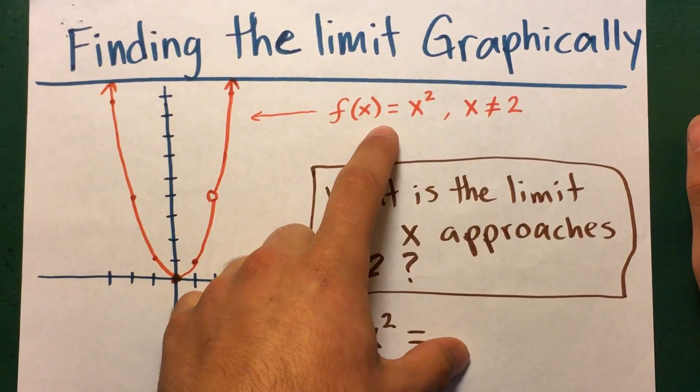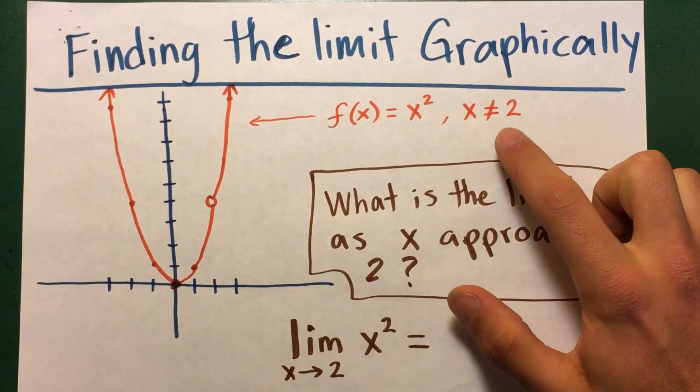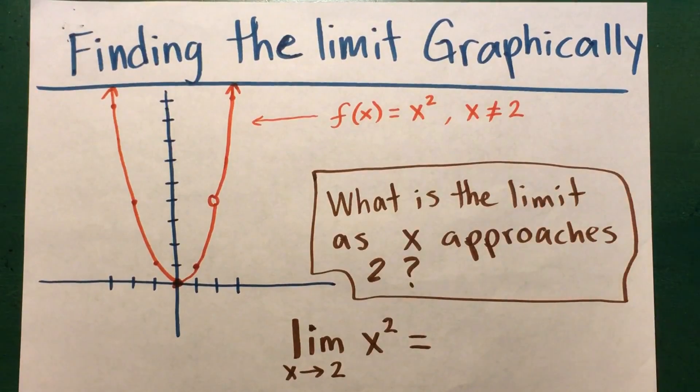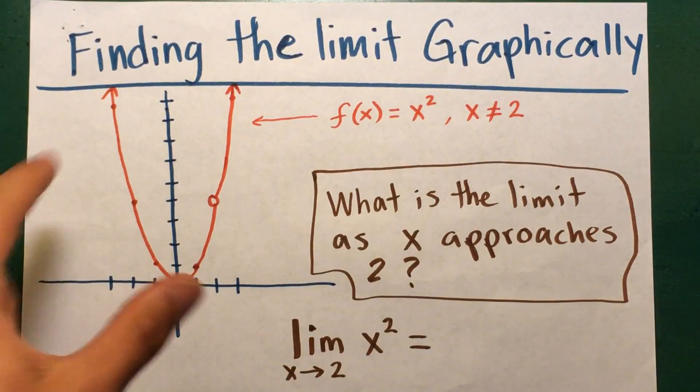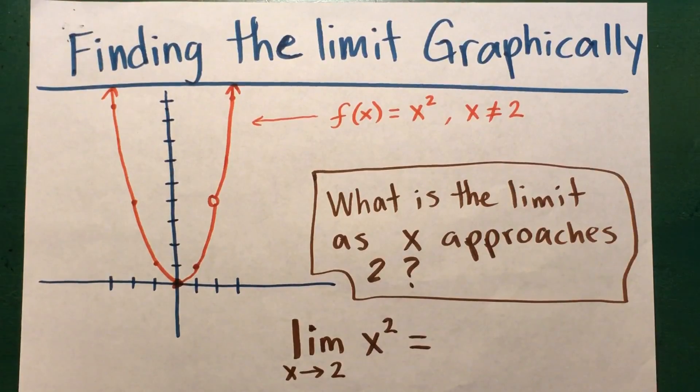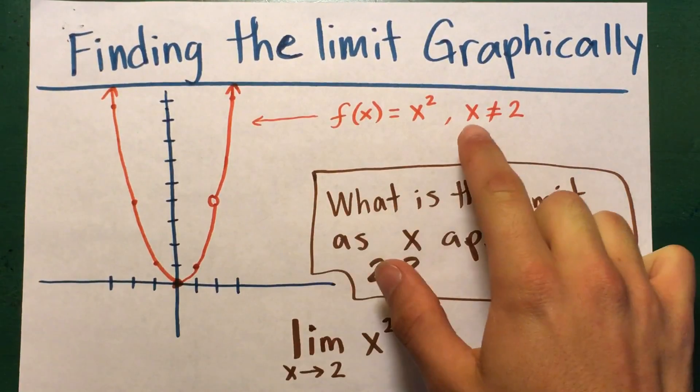f(x) = x² with a restriction that x cannot be equal to 2. So right here we have a regular parabola f(x) = x² and as we see x cannot be 2.